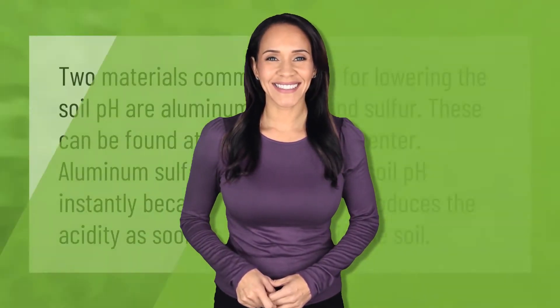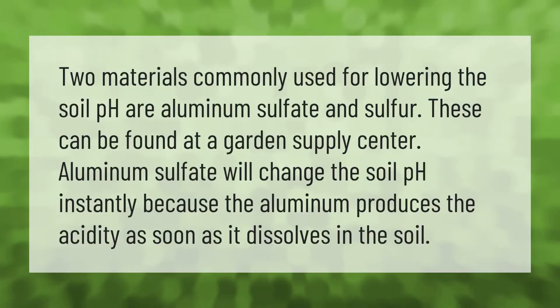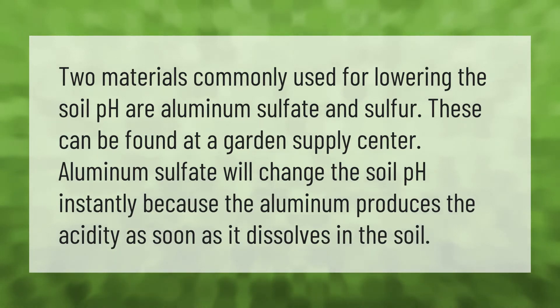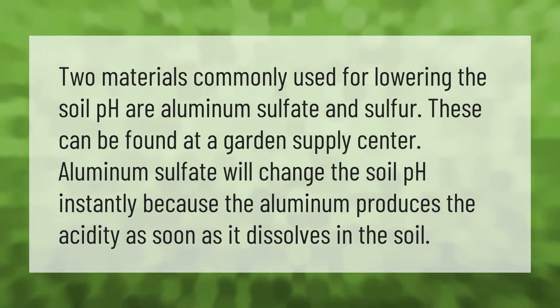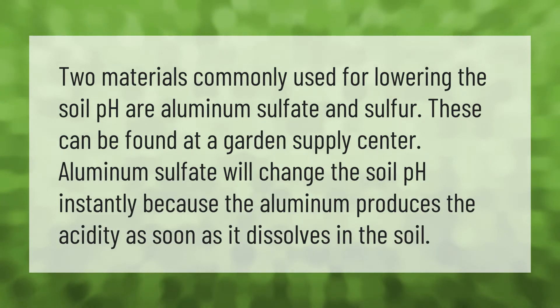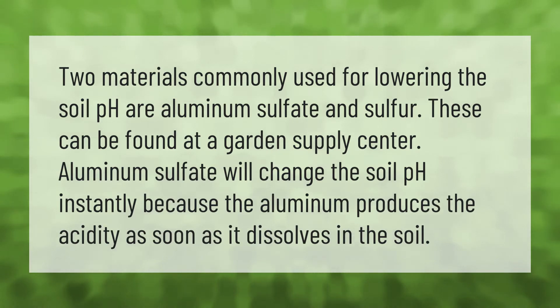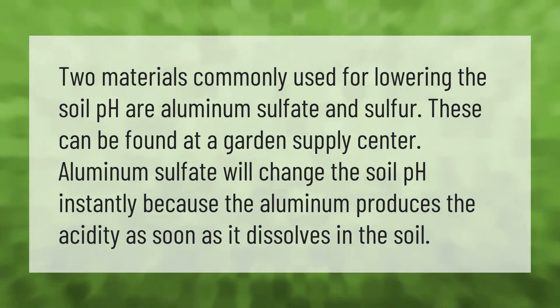Two materials commonly used for lowering the soil pH are aluminum sulfate and sulfur. These can be found at a garden supply center. Aluminum sulfate will change the soil pH instantly because the aluminum produces the acidity as soon as it dissolves in the soil.